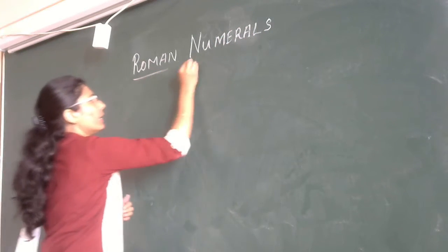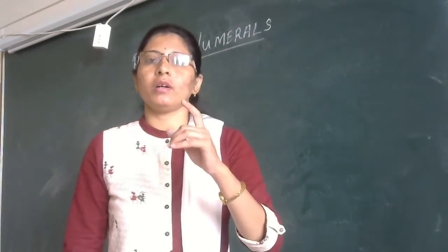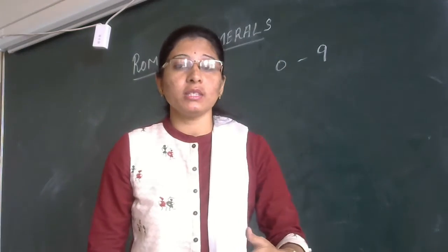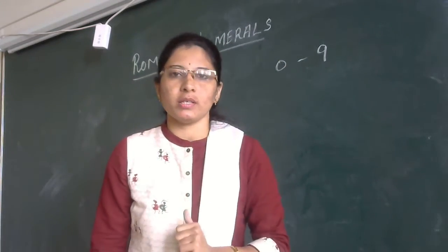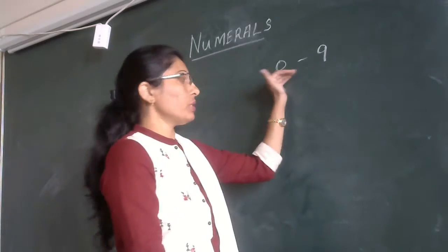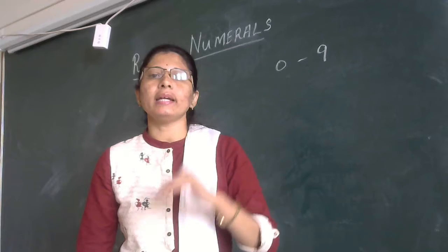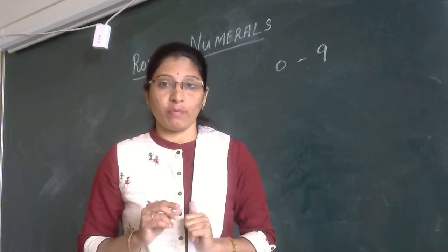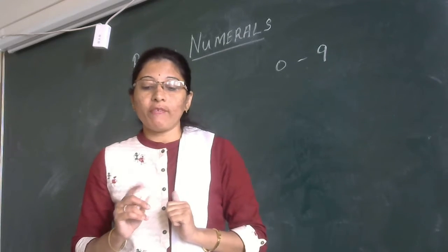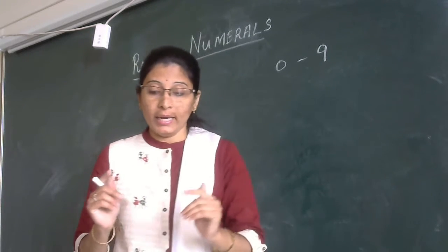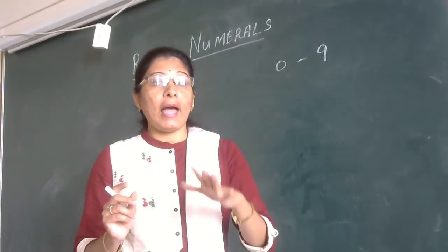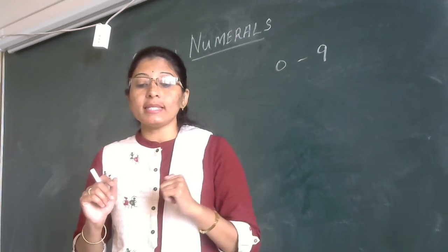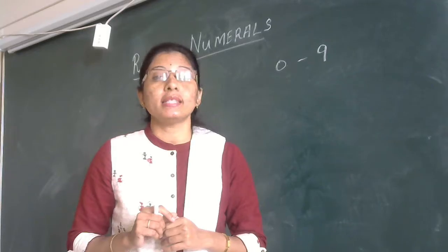In our system we use 10 symbols, 0 to 9. By using these symbols we make different numbers like 2 digit, 3 digit, 4 digit numbers. Like that, Romans in Roman numerals use only 7 symbols. By making, using the pictures of hands or figures, these symbols are used.